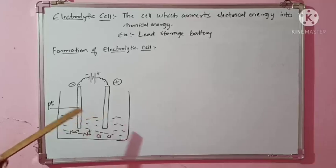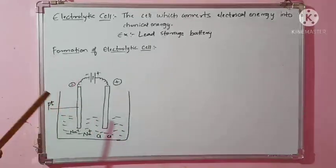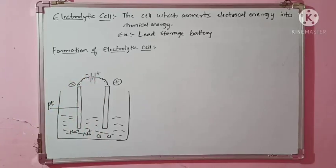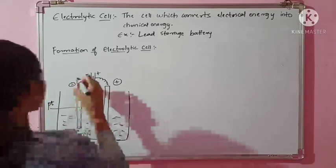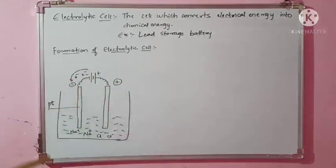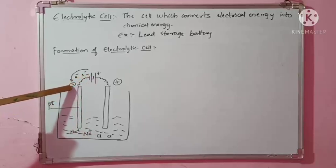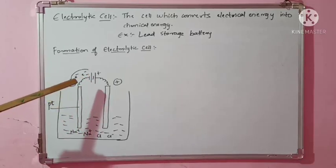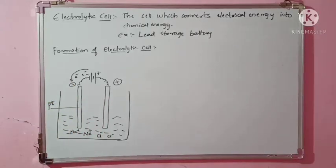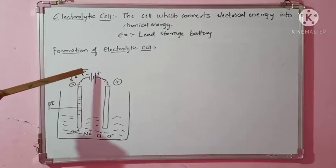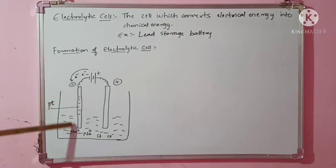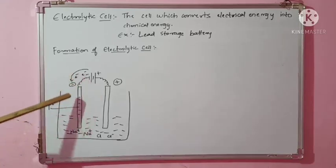The left electrode is connected to the negative terminal of the battery, which supplies electrons to the left electrode. Because electrons are negatively charged, this electrode becomes negatively charged, and there is an accumulation of electrons. This electrode is accepting electrons, so I have shown a negative sign here.